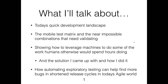So what I'll cover today: the quick development landscape with CI, CD, and Agile; the complex combinations of the mobile test matrix and all the things that need to be validated; how we can leverage machines to do things that us humans would normally spend hours doing; the solution I came up with; and how automating exploratory testing can help you find more bugs in the short release cycles we have today.